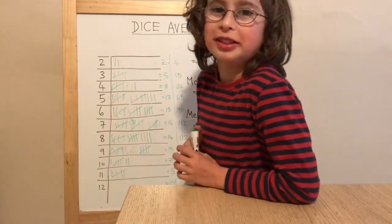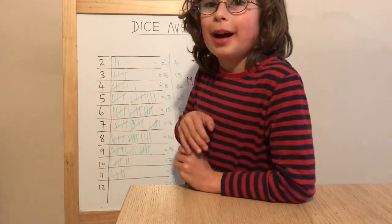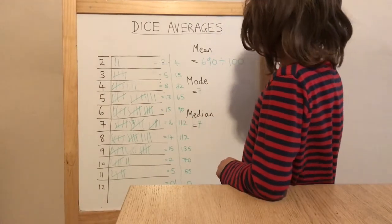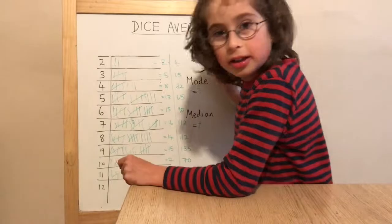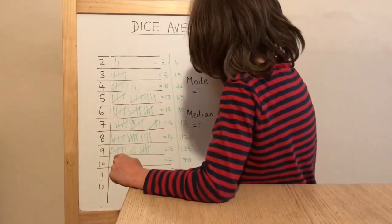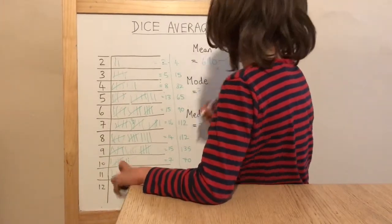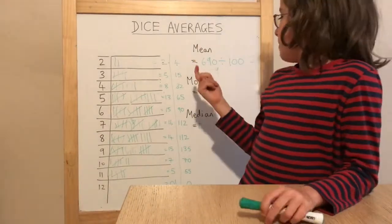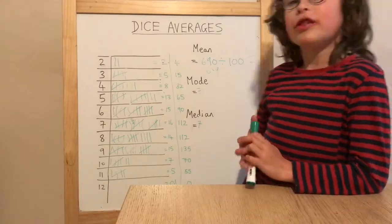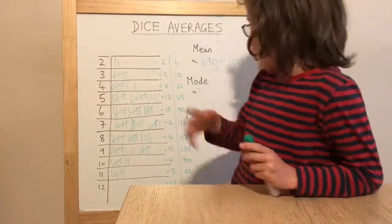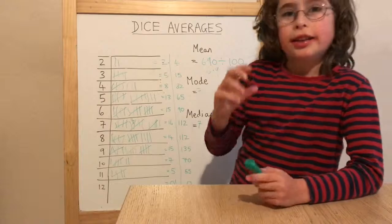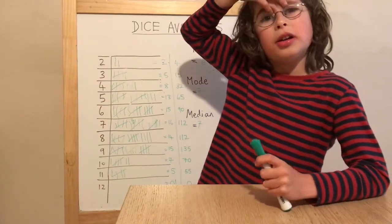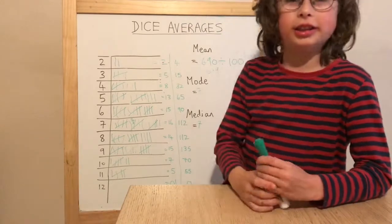My mum helped me with this — she's the one who set up the camera too. I'm gonna put an equal sign and draw 6.9. So you can see that the mean, the mode, and the median are pretty much the same, although the mean is a tenth of a number smaller than seven.